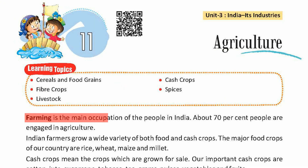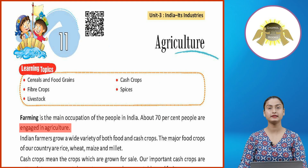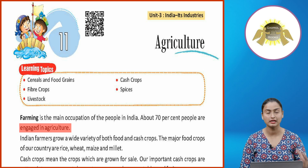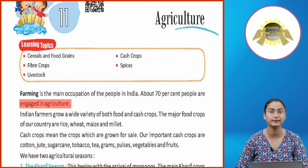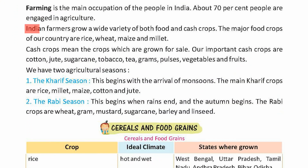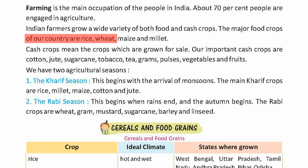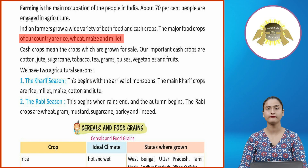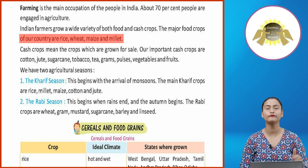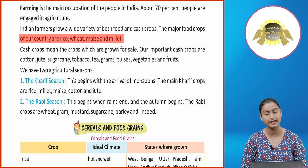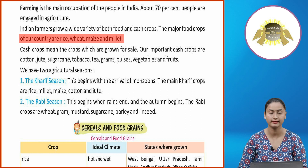Farming is the main occupation of the people in India. About 70% of people are engaged in agriculture. Indian farmers grow a wide variety of both food and cash crops. The major food crops of our country are rice, wheat, maize and millet.